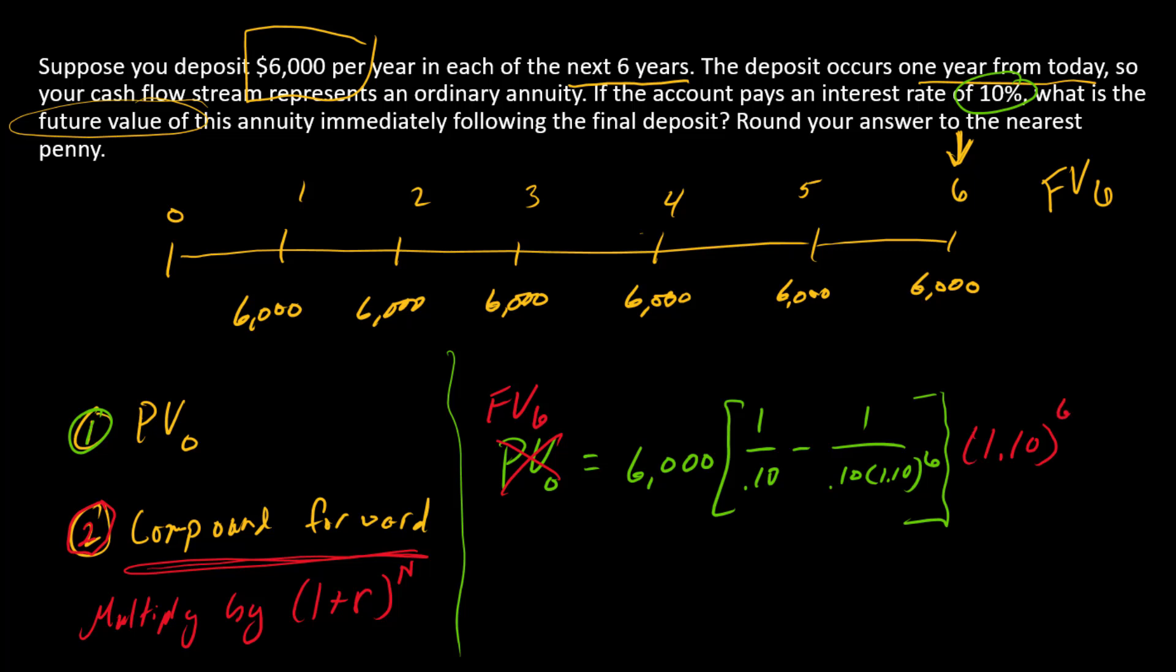I do this all together and I end up with the answer for the FV at time six. So the answer to this problem is $46,293.66.